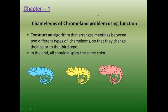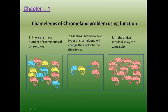Now we are going to see the Chameleons of Chromeland problem using function. Construct an algorithm that arranges meetings between two different types of chameleons so that they change their color to the third type. In the end, all should display the same color. There are many chameleons of three colors, but we don't know the exact number — we don't know how many are yellow, how many are blue, or how many are pink.